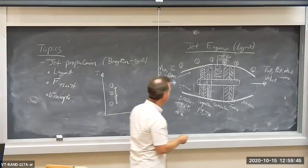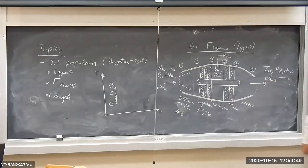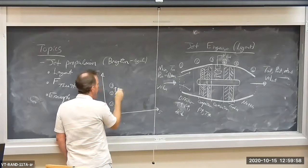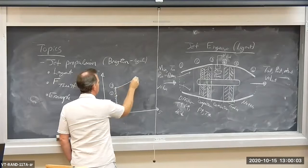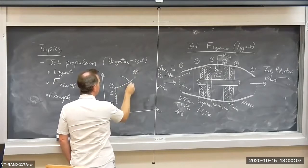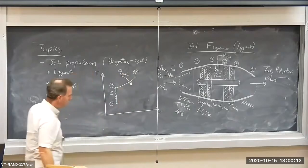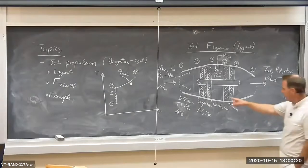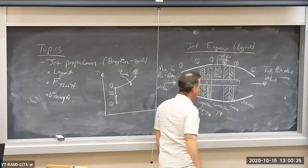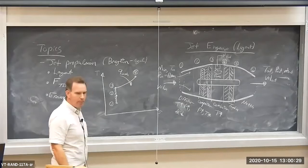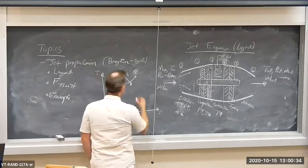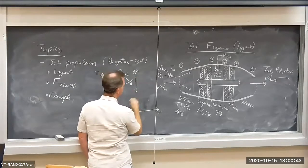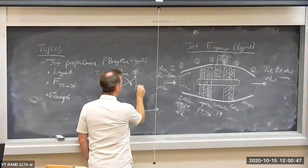Then we pass the air through a combustor — a chamber in which fuel is injected and ignited, releasing heat. We assume this is done isobarically. So we have heat addition from three to four in the combustor, and temperature goes up. We have very hot, pressurized air, and then we pass the products of combustion through a turbine. Pressure falls, and if it's reversible and adiabatic, entropy is constant. We end up at state five, which is the turbine exit.